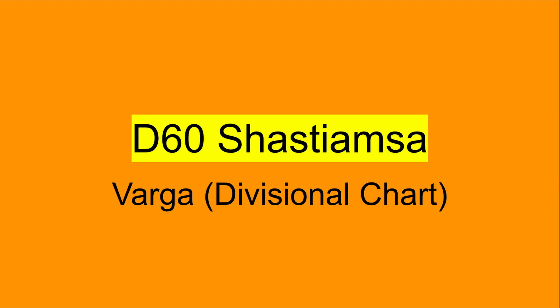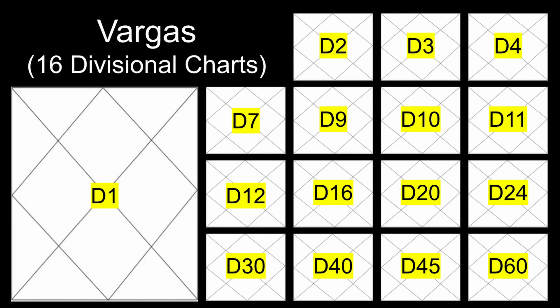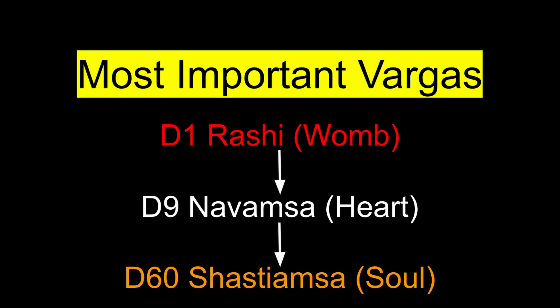The D60 chart is a very important chart when we look at karma and astrology. For those new to Vedic astrology, there are 16 divisional charts or Varga charts that are typically used. So it's not just the birth chart — there are actually 16 charts. There are really three charts that are extremely important when you want to understand the karmas in astrology.